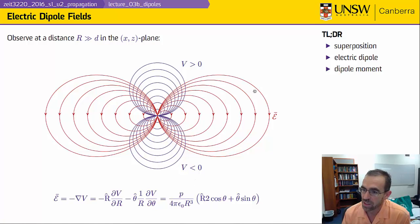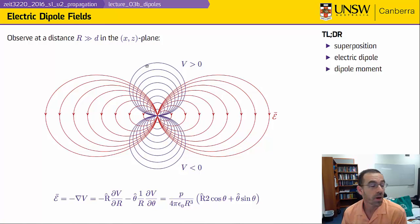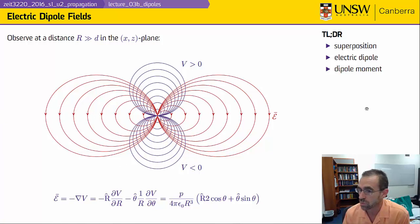The fields take this form, with fields exiting the positive charge and terminating on the negative charge. In red I have my electric field lines; in blue I have my electrostatic equipotential curves. Up here I have positive potentials, down here negative potentials, and the potential equals zero on this plane.